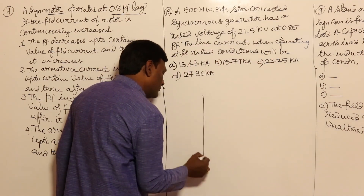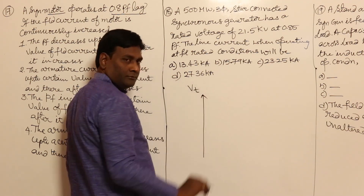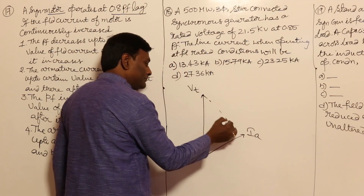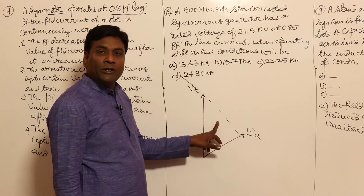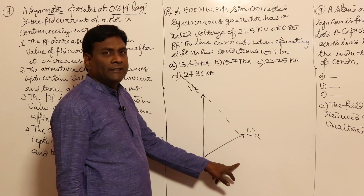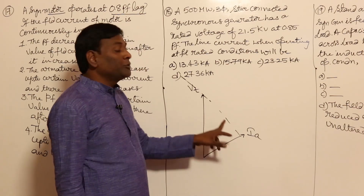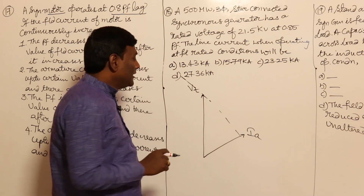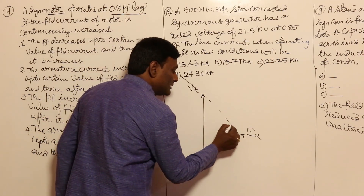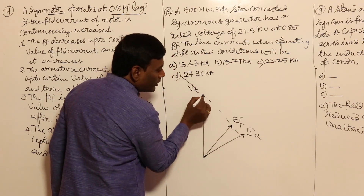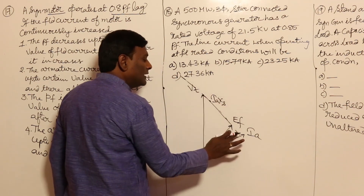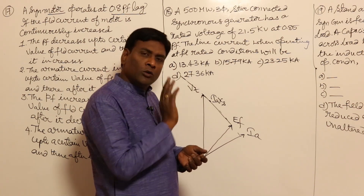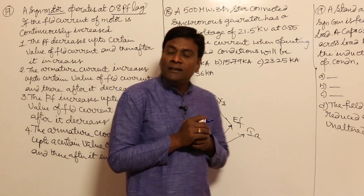Let us draw the phasor diagram. This is Vt. With respect to Vt, Ia is lagging. Now, 90 degrees to Ia gives the Ia-axis. Ef should lag behind Vt in a motor — the field pole lags behind the resultant — so Ef should be here. This is Ef and this is the Ia-axis.